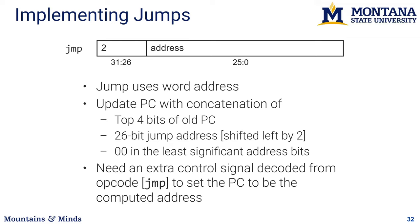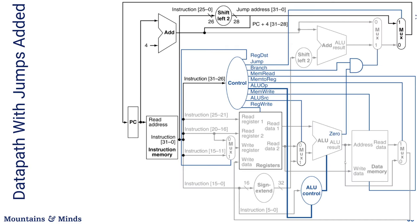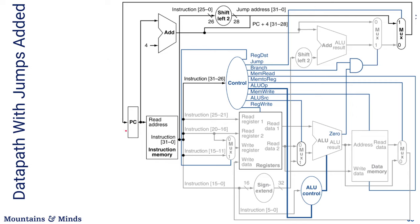The way this gets added to our control path: we take the program counter incremented by four as one option. From the jump instruction, we take the address, shift it by two, combine it with the program counter, and that goes into a multiplexer. If the instruction being decoded is a jump, the jump line is set and we pass this value through the multiplexer back into the program counter for the next instruction. This wraps up our basic data path example.